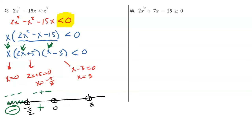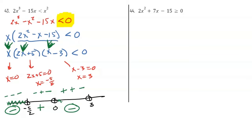The next interval: pick a number between 0 and 3, like 2. Plugging in 2: the x factor gives a positive. The (2x + 5) factor gives 2(2) + 5 = positive. The (x − 3) factor gives 2 − 3 = negative. So positive × positive × negative is overall negative — and I like negatives. I want numbers that are negative, less than zero. So I like that interval.